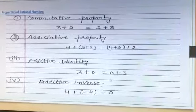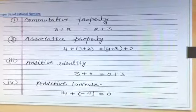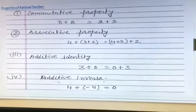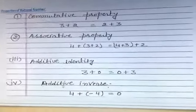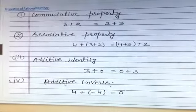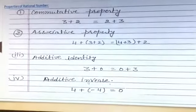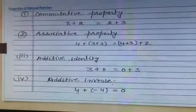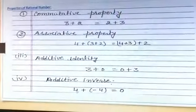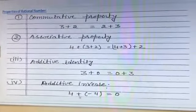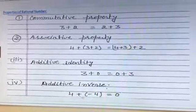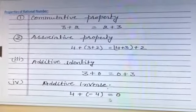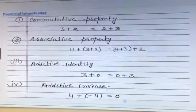Next property is additive inverse. Additive means add, and inverse means opposite. So the additive inverse of 4 — what do we have to add to 4? We add minus 4, and the answer will be 0.